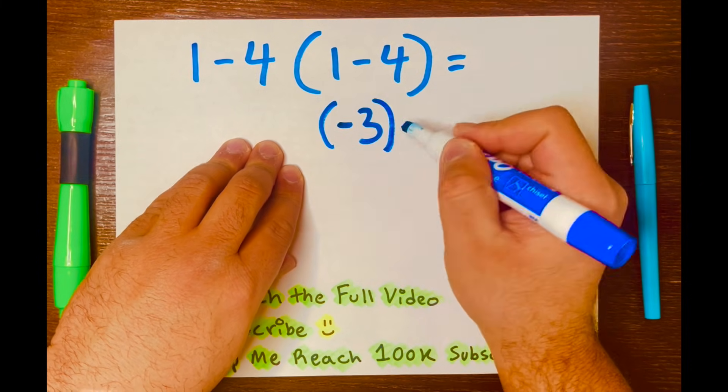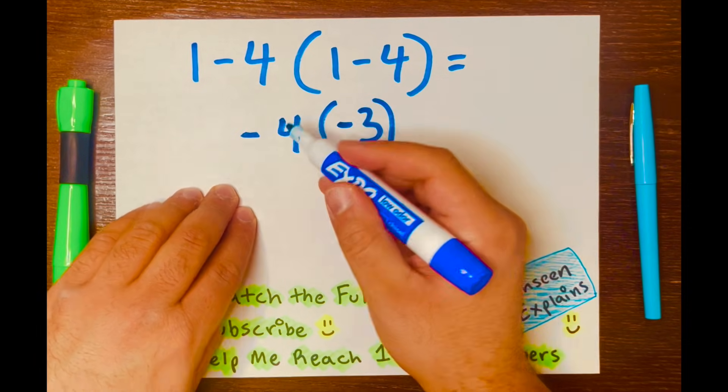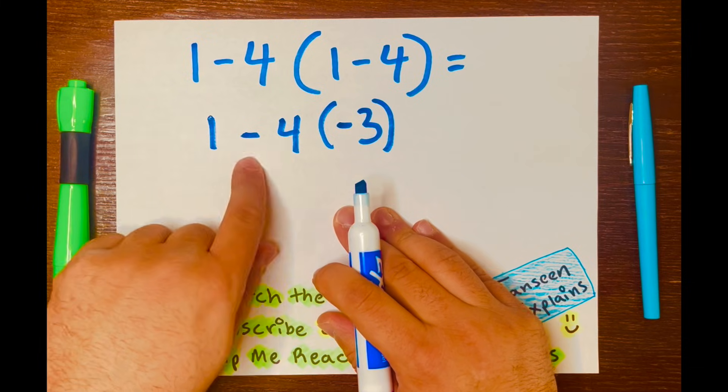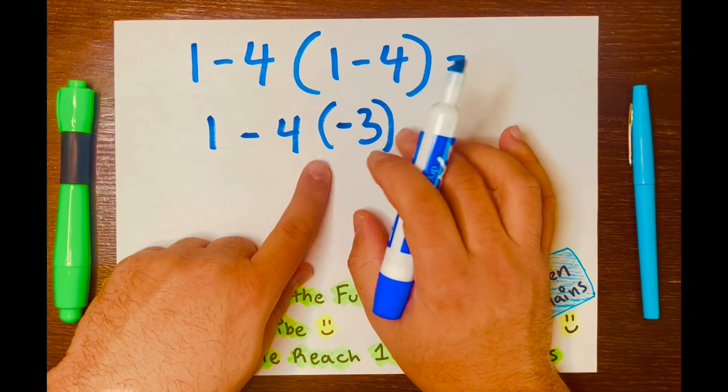And then keep the parentheses, bring down the 4, then the subtraction symbol down and the 1 down. Now we have 1 minus 4, and then you have negative 3 inside these parentheses.